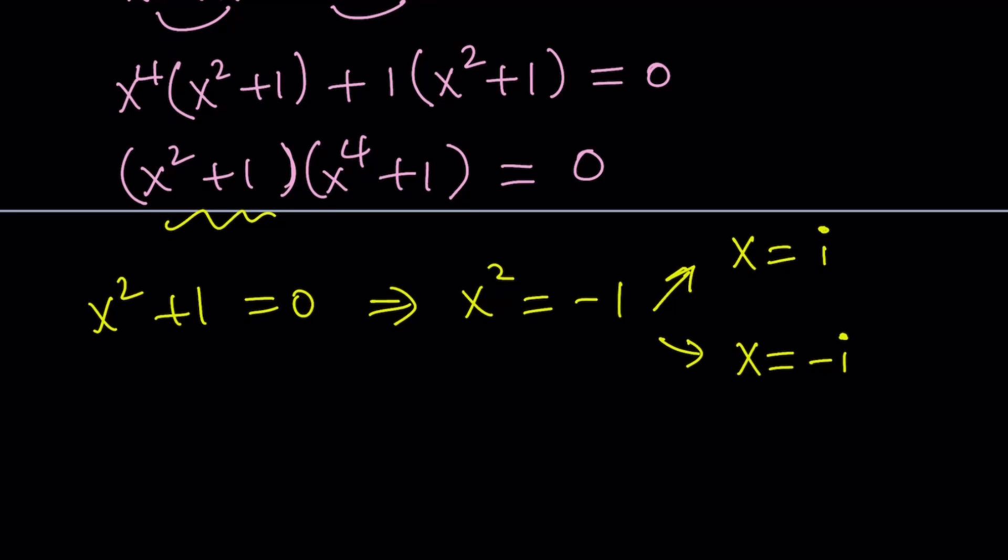Make sense? So in other words, we found the square root, the complex roots of -1. The complex square roots. There's two of them.